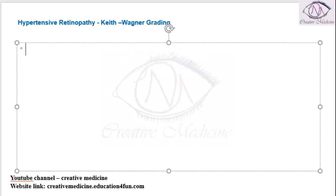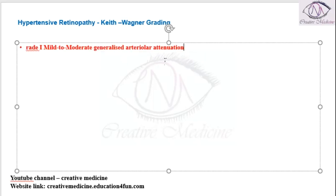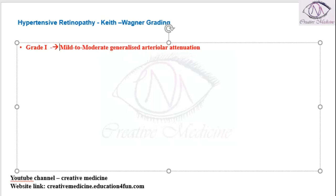In Grade 1, there is mild to moderate generalized arteriolar attenuation. Mild to moderate generalized arteriolar attenuation is the defining feature of Grade 1.